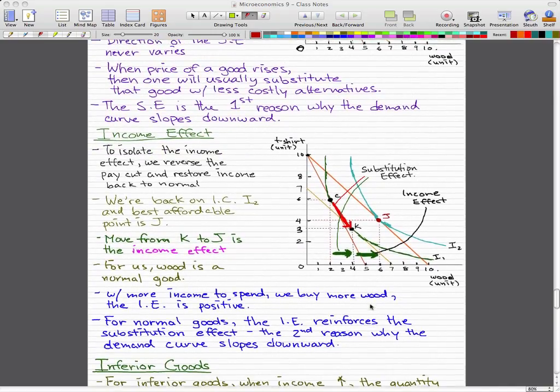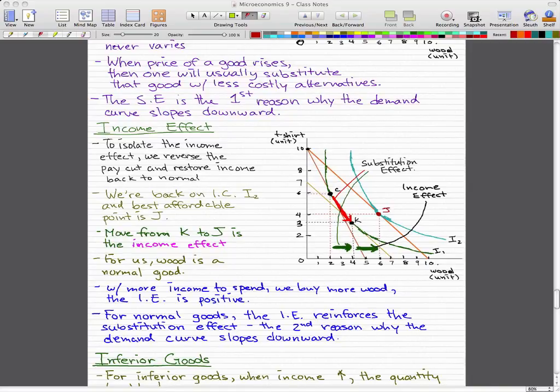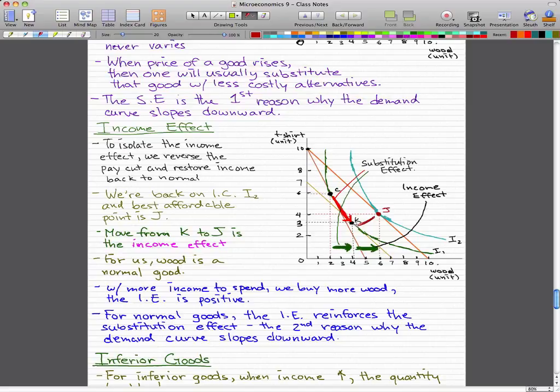Now the income effect. To isolate the income effect, we will reverse the pay cut and restore our income back to normal. We're back on indifference curve I2 and our best affordable point is J. So what actually happens is we had our substitution effect, so our budget line was this lighter orange that I mentioned when we were talking about the substitution effect. Now the income effect comes into interaction, our pay cut gets reversed and back to normal, so we can move back to indifference curve I2 with our lower costly alternatives. So we move from point K to point J and that is the income effect.